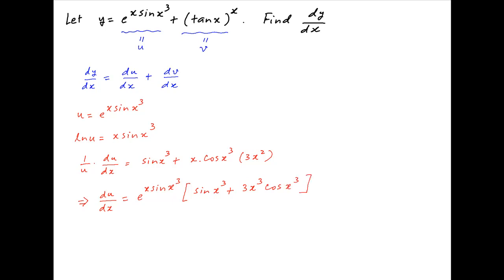Now the second term in the expression for y is v, which is equal to tan x raised to the power x. Again, take the log of both sides. Therefore, ln v is equal to x times ln tan x.